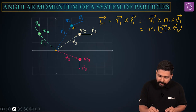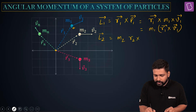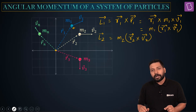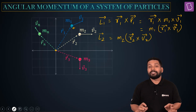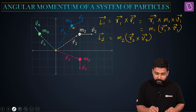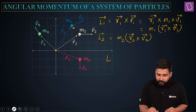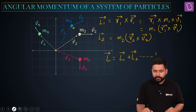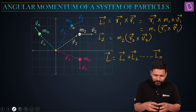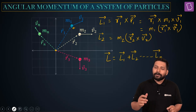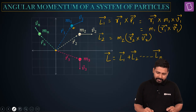Similarly for the second particle, L2 is going to be equal to M2 times R2 cross V2, and so on for each of the particles. The net angular momentum of the system of particles is going to be the vector summation of all individual angular momenta — L equals L1 vector plus L2 vector and so on up to Ln vector. You just have to add these vectorially, and then you get the final value of the angular momentum vector for the system.